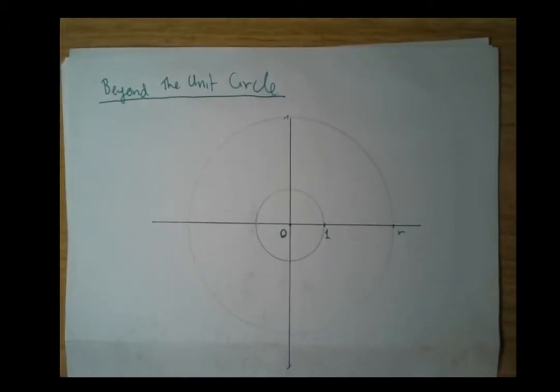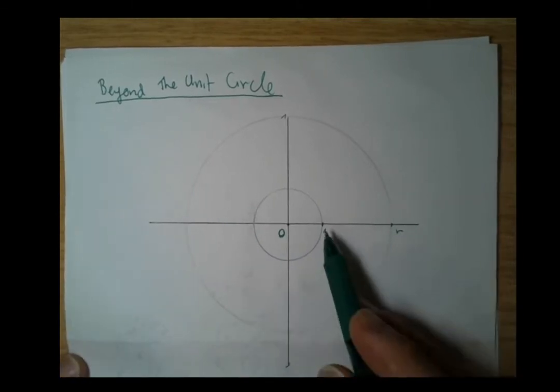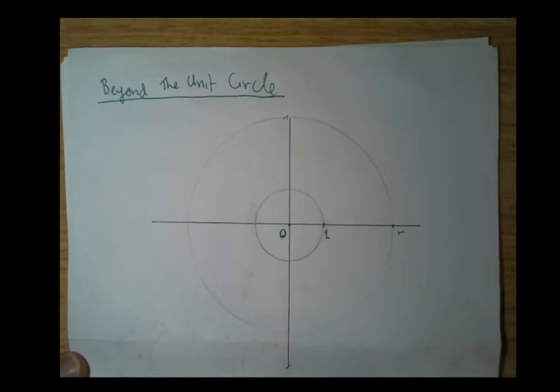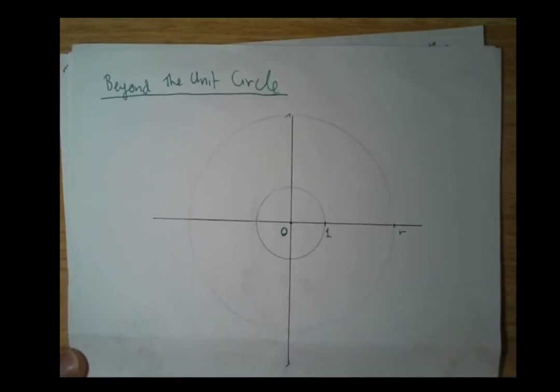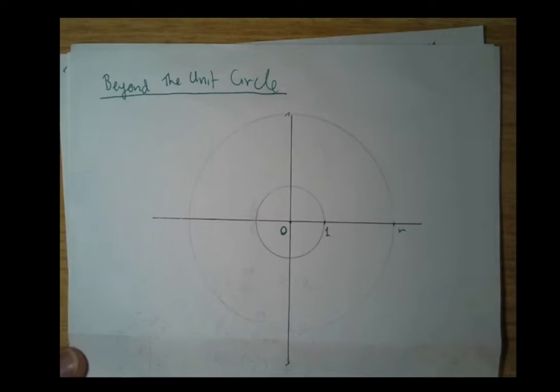We're going to take a look at the topic of beyond the unit circle. We've defined the sine and cosine of an angle theta with respect to our unit circle, which you see as the smaller circle of these concentric circles—two circles with the same center.